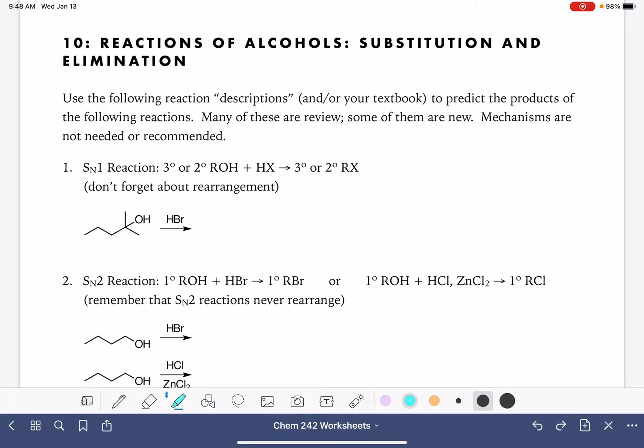The first reaction that we're going to review is the SN1 reaction. This reaction takes place between a secondary or tertiary alcohol and an HX molecule, like HBr, and it produces an alkyl halide. The one thing that you need to keep in mind if you're looking at an SN1 reaction is that it proceeds via a carbocation, so you want to remember there's potential for carbocation rearrangement.